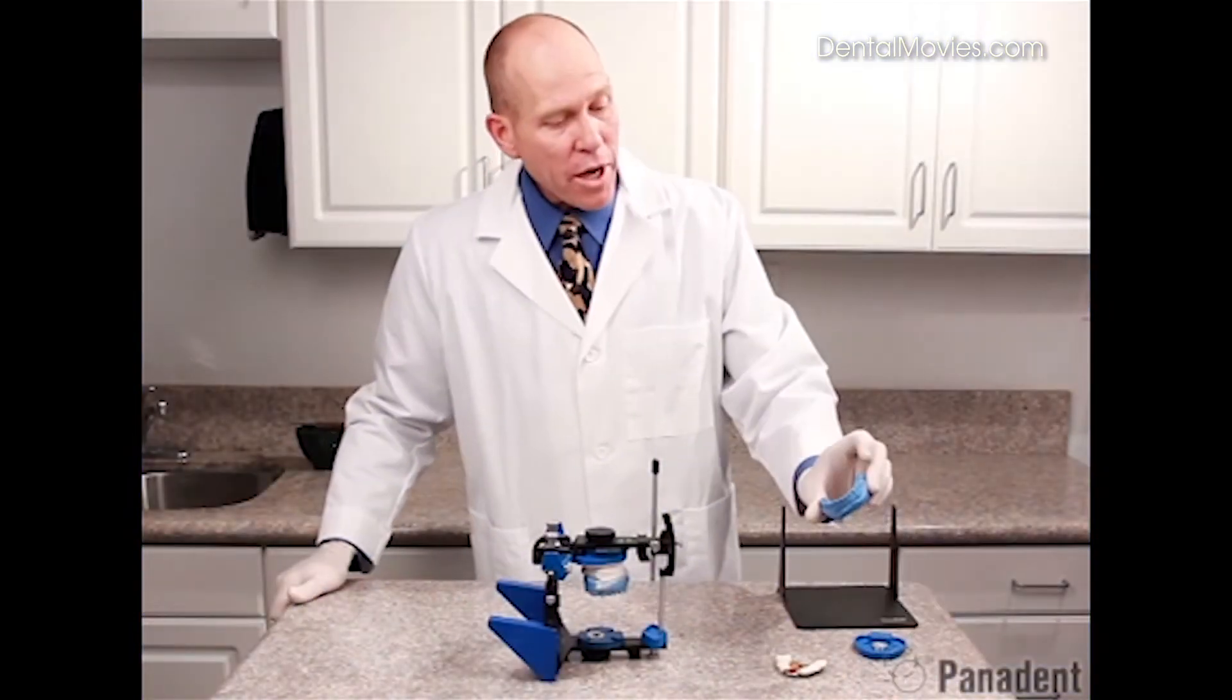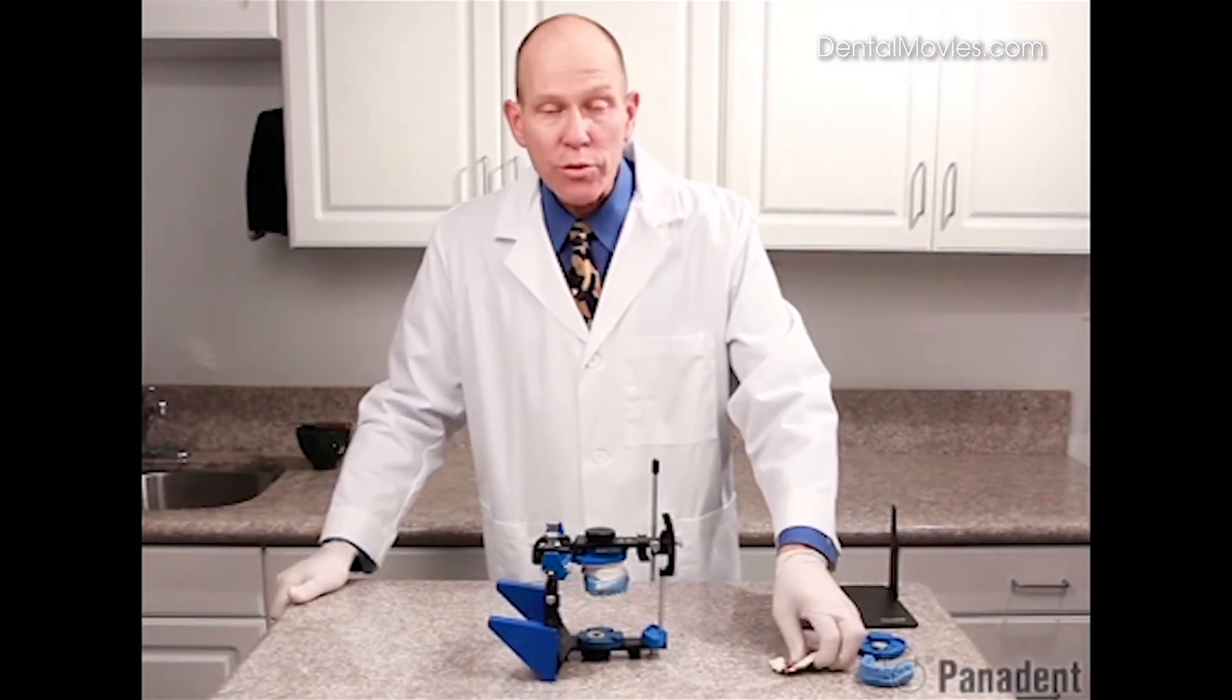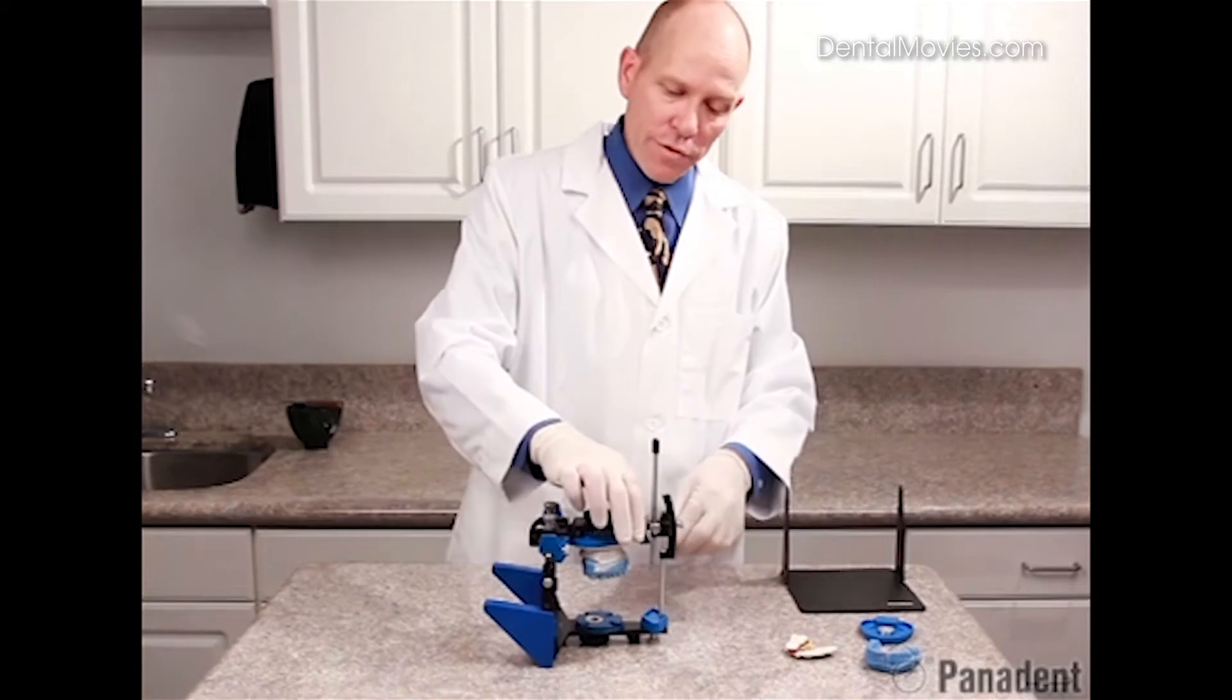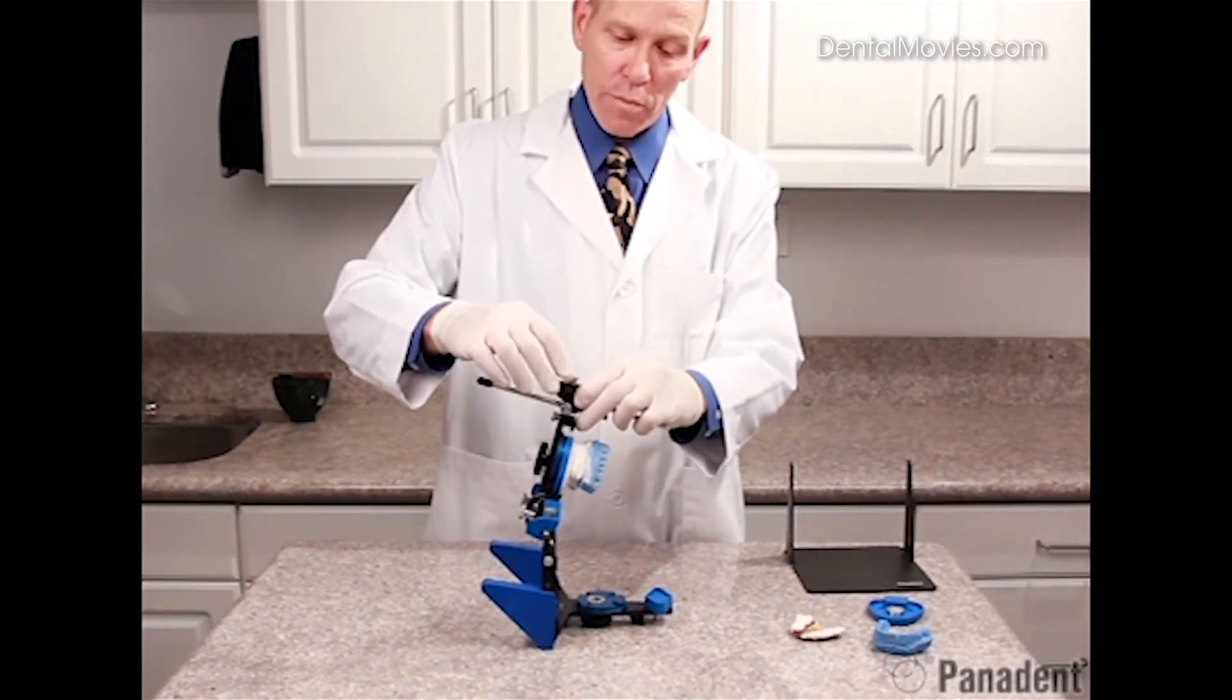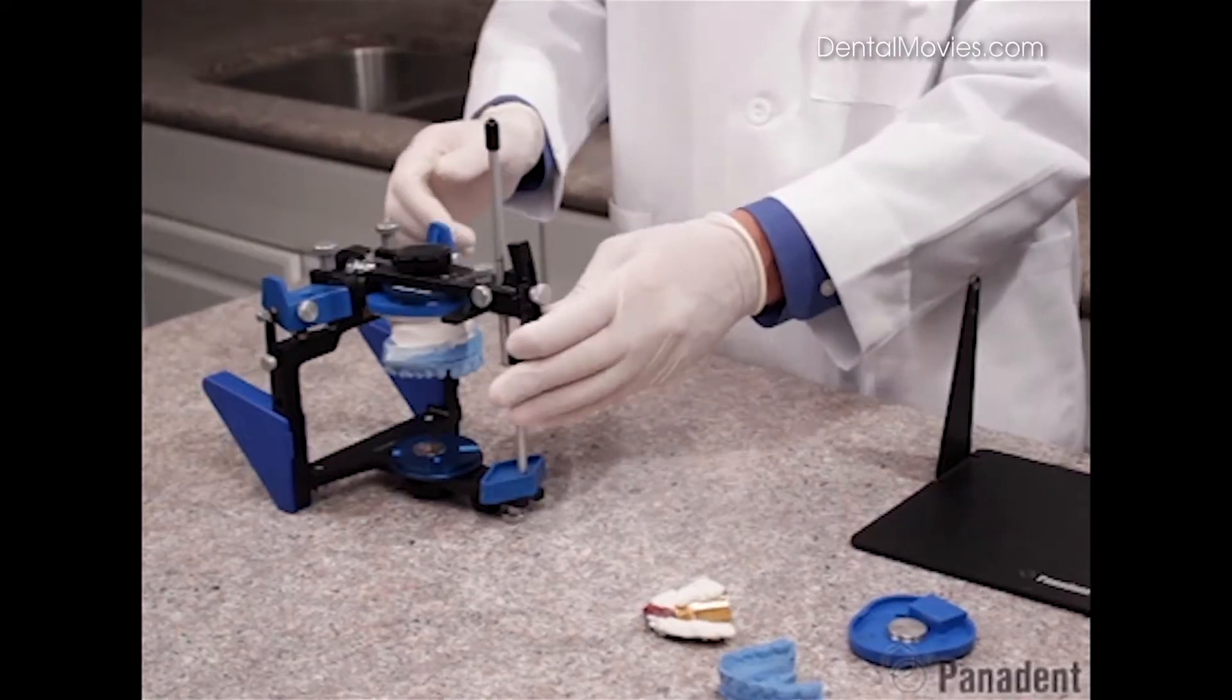We're now in the laboratory getting ready to mount our mandibular casts using our centric relation record. In preparation for that, we do want to adjust our incisal pin down about three millimeters, the approximate thickness of that interocclusal record.